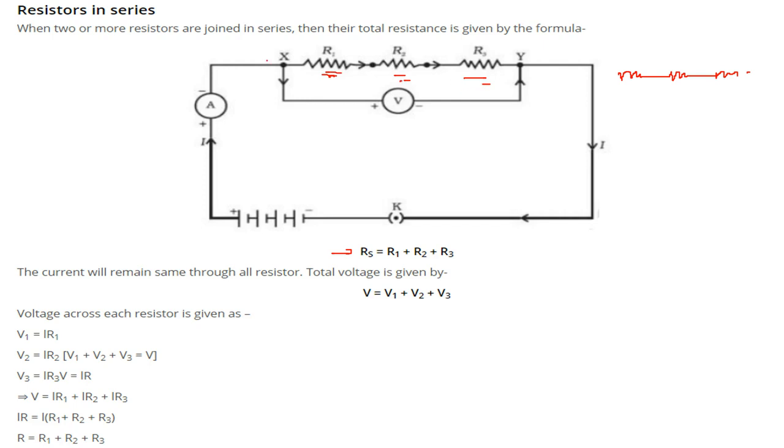The current, because if you see here, current remains the same for all the resistors. The current is same, but the total voltage is given by, this is voltage V1, this is V2, this is V3. So V is given by V1 + V2 + V3.